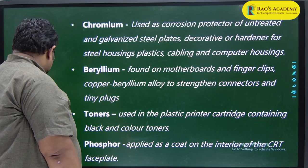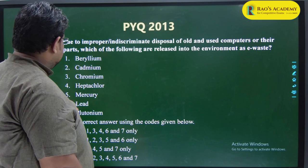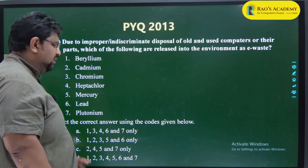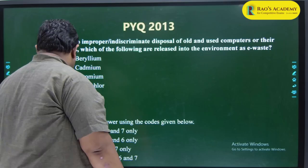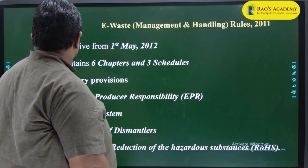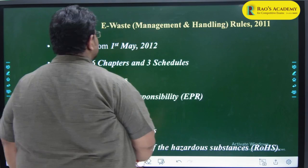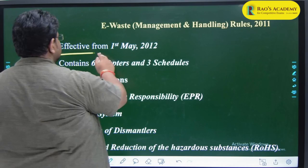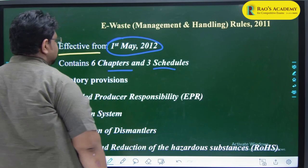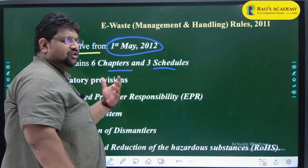If you know the list - beryllium, cadmium, chromium, mercury, lead - you know heptachlor and plutonium are not part of e-waste. As part of e-waste study, you must also know the e-waste management and handling rules 2011, effective from 1st May 2012, containing 6 chapters and 3 schedules.